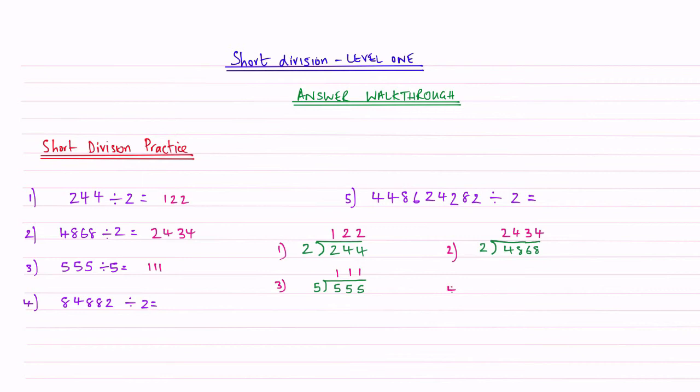Question 4. It's line and curly brace time. We've got 84,882. And we're seeing this time how many 2's going to it, or what our answer would be if we halved it. Asking ourselves the questions. How many 2's going to 8? 8 is 4.